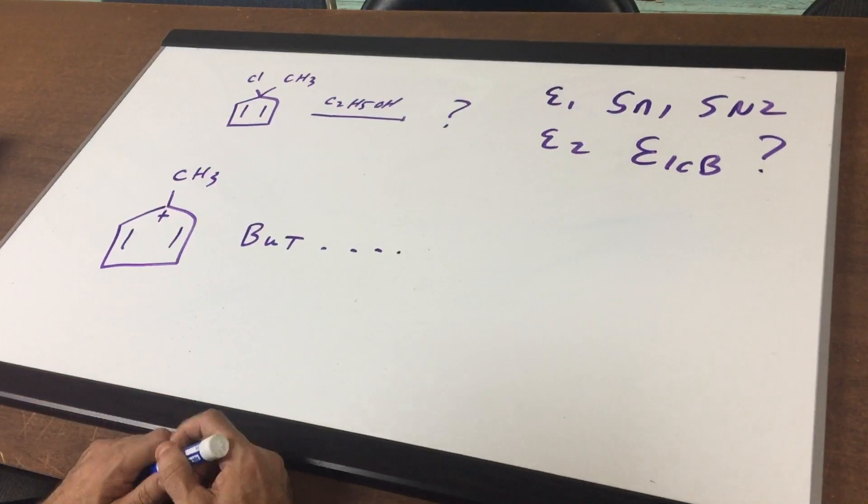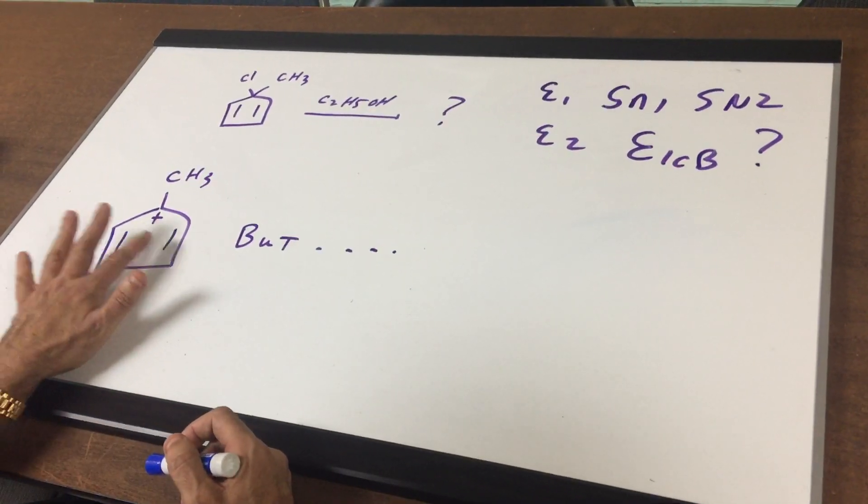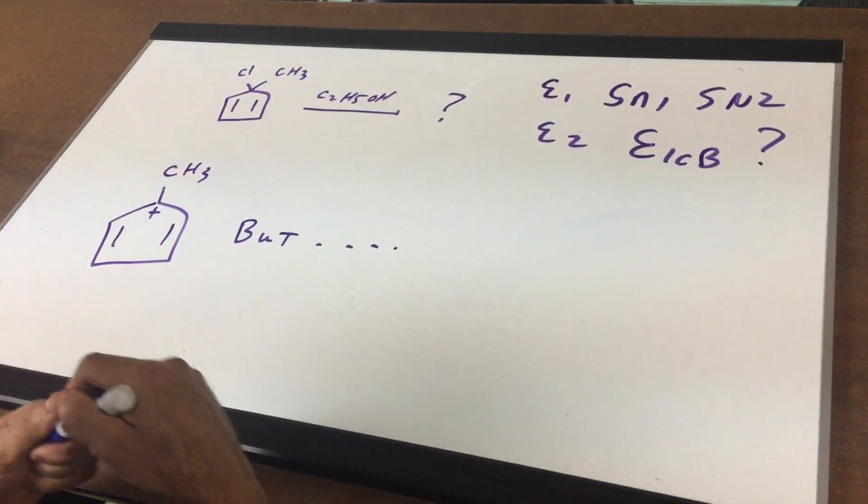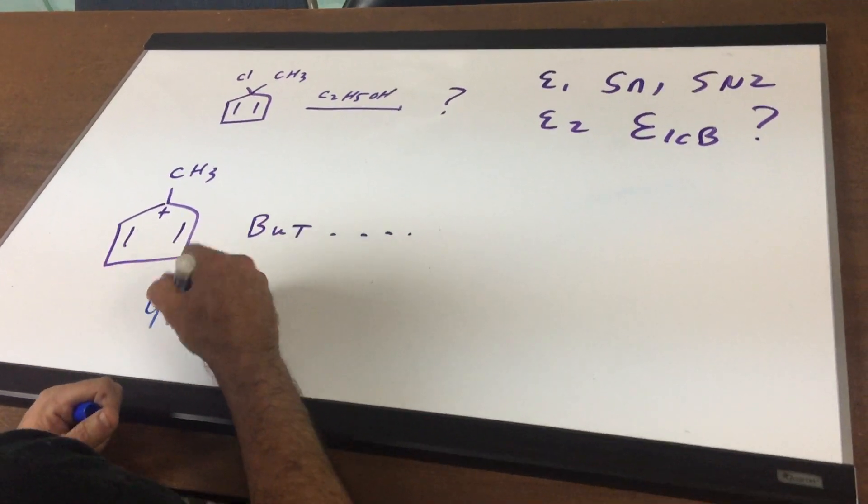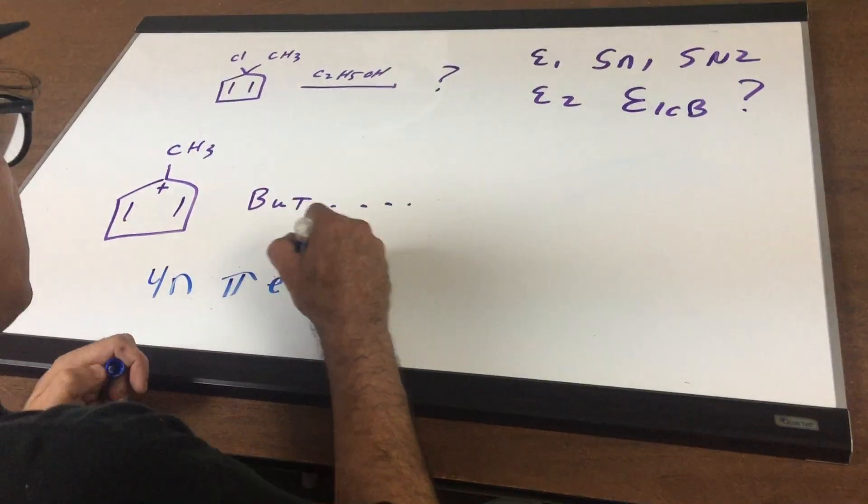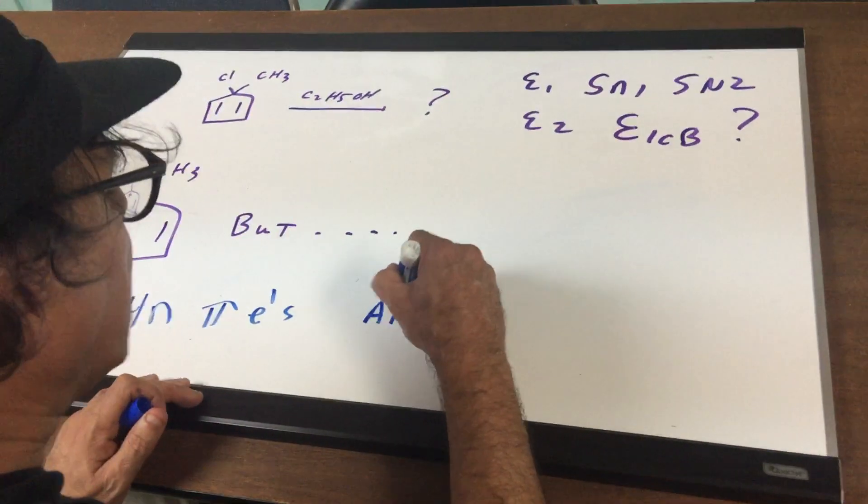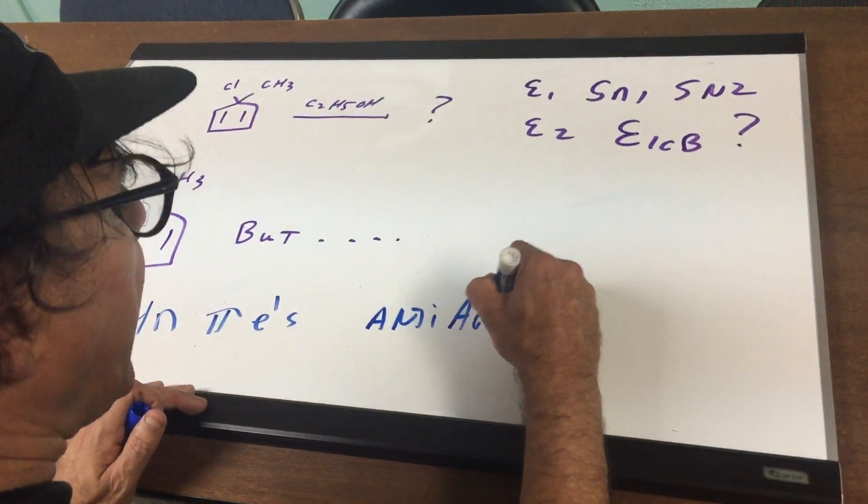Even though it's tertiary, as you can see, this ring system, which is cyclic, planar, fully conjugated, contains 4n pi electrons. And anything that contains 4n pi electrons is anti-aromatic.